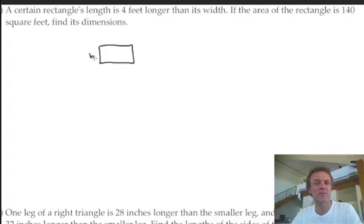Now, if that's its width, then the length is four feet longer than that. The length is W plus four. Notice again, there's no more letters. I'm not writing L for length. The length is W plus four because it's four feet longer than the width.